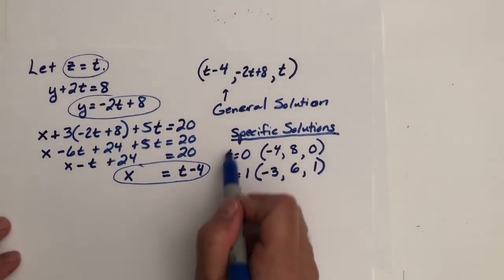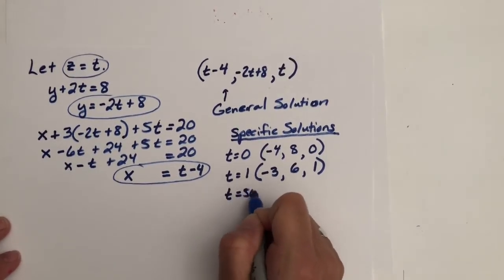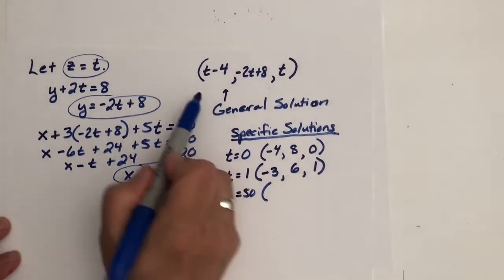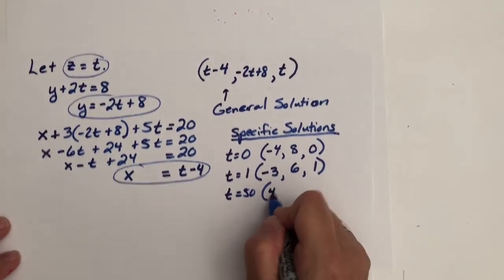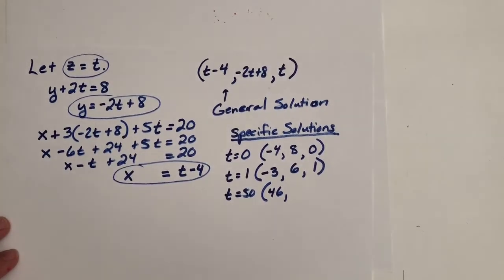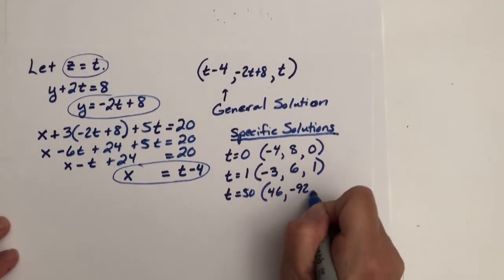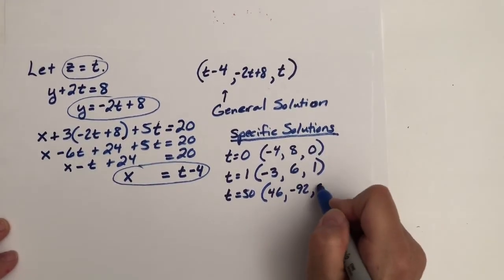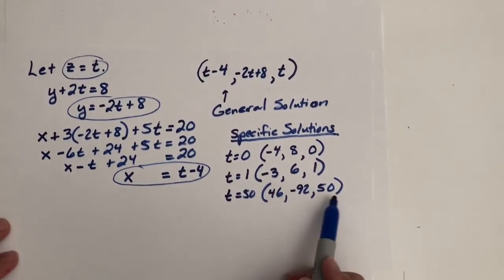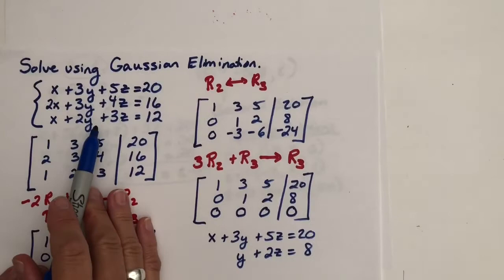Substitute other numbers in. There's no restriction on these, except they'd be real numbers. I could put in t equals 50 if I wanted to, and pop it in. 50 minus four is 46. 50 times negative two plus eight, what is that? Negative 100 plus eight, negative 92 and 50. So this is another one of the infinite number of solutions that would work in this system.